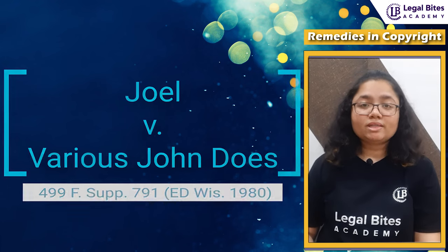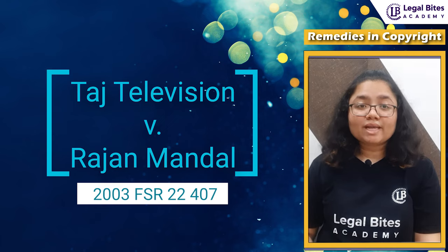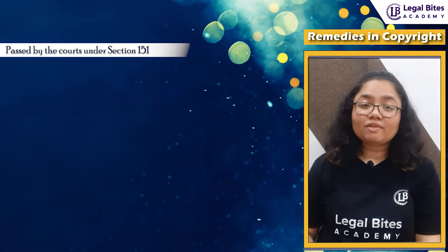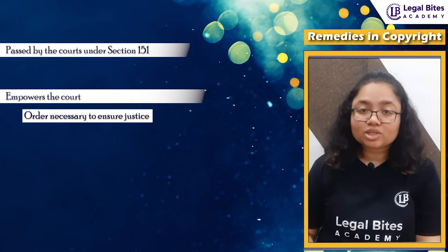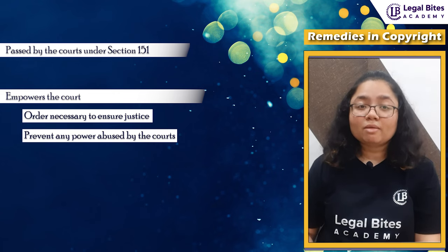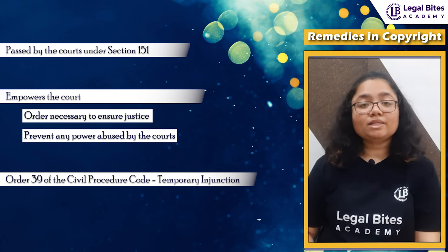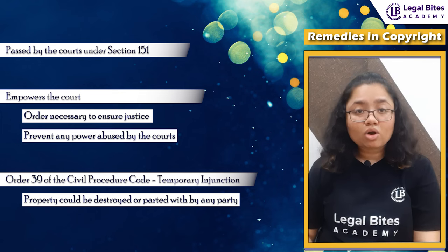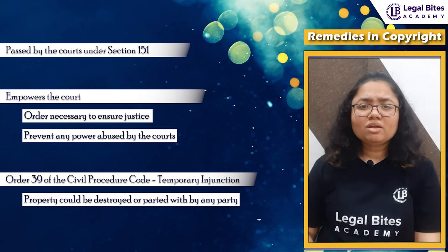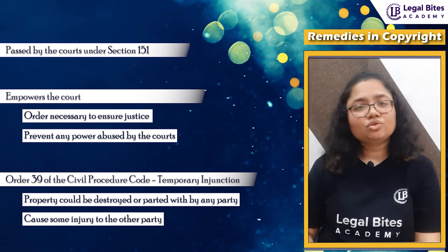The Ashok Kumar order was first issued in the case of Thatch Television versus Ranjan Mandal, against cable TV operators who telecasted a work without license. These orders are passed under section 151 of the Civil Procedure Code, which empowers the court to make any orders necessary to ensure justice and prevent abuse of process. Order 39 of the Civil Procedure Code provides for temporary injunction, which can be granted if the property could be destroyed, parted with, or disposed of to defraud creditors or cause injury to another party.